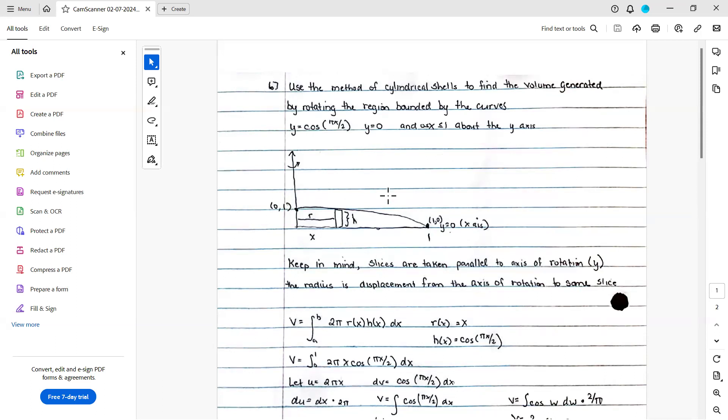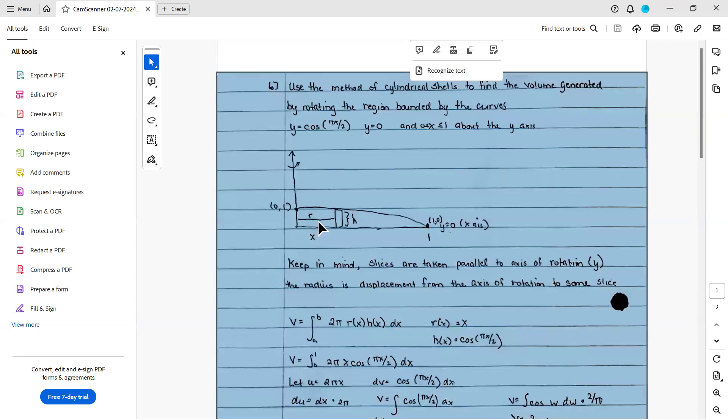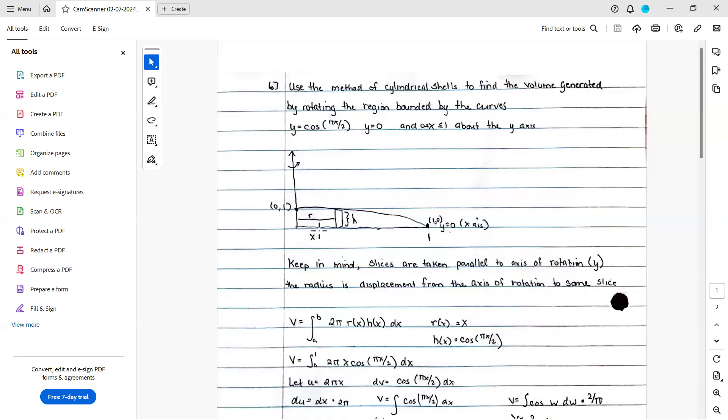And we know that the line y equals 0 is another term for the x-axis. So we have a region bounded by the x-axis and by this curve on the top.